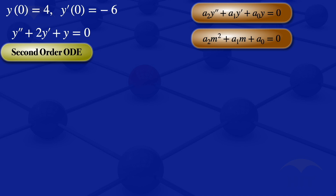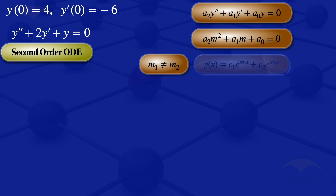If we have real distinct roots, m1 not equal to m2, the solution to the ODE is y equals c1·e^(m1·x) plus c2·e^(m2·x).